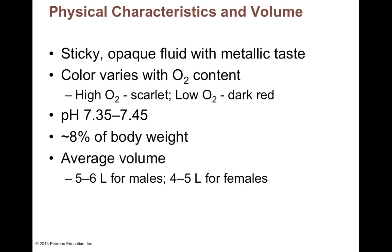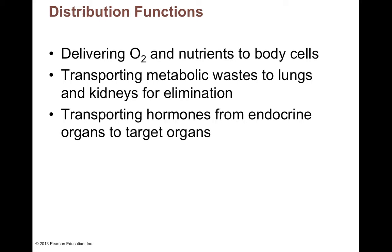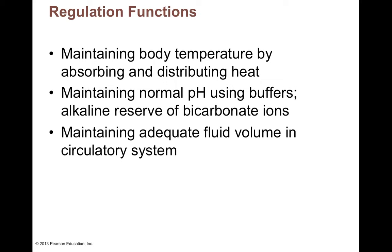In terms of the functions of blood, one of its major functions is distribution — not just of nutrients like O2, but also distribution of wastes. Blood picks up wastes from tissues and carries them to the organs that help eliminate those wastes. Blood also transports hormones, which defines hormones as being transportable through the bloodstream. It also helps regulate body temperature by distributing heat throughout your body.